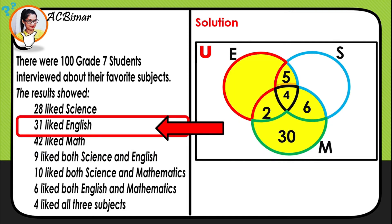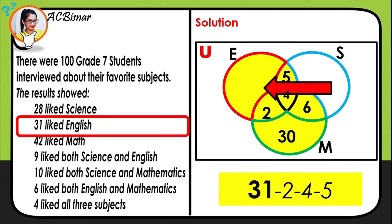For students who like English, the given is 31. We subtract 5, 4, and 2 from 31: 31 minus 2 is 29, minus 4 is 25, minus 5 is 20. So we write 20 in the English-only region.